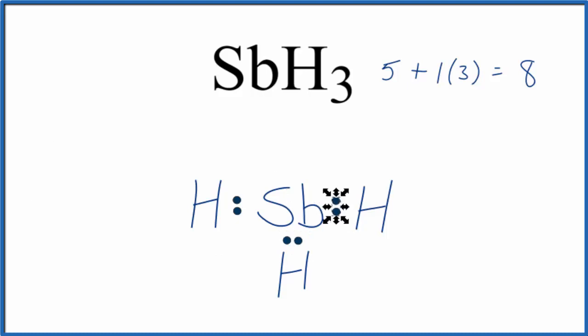And then the last two we'll put on top of the antimony there, the Sb, and that'll complete its octet. So at this point we have eight valence electrons around the Sb. That has an octet, and each hydrogen only needs two valence electrons to have a full outer shell.